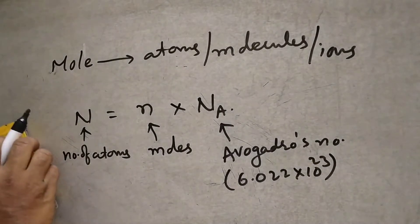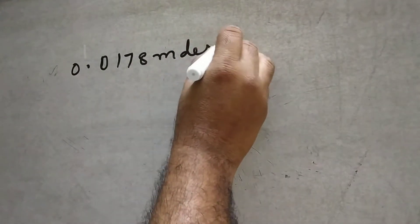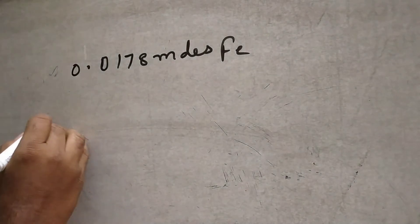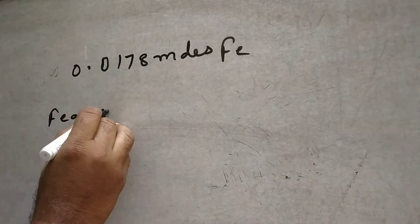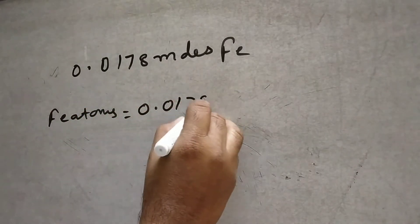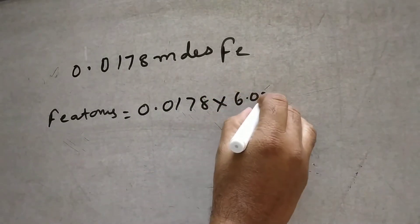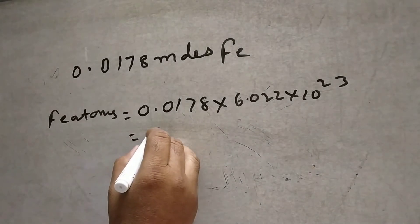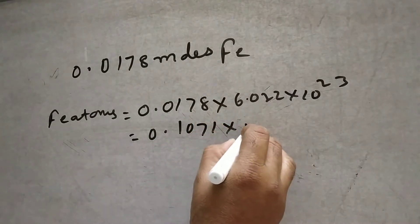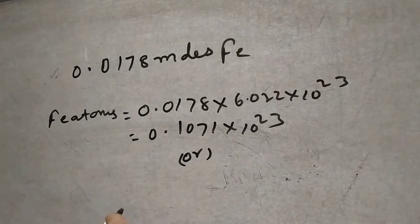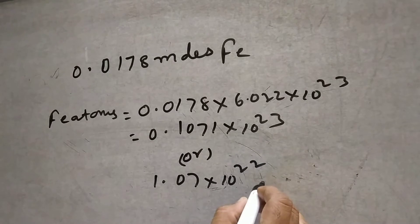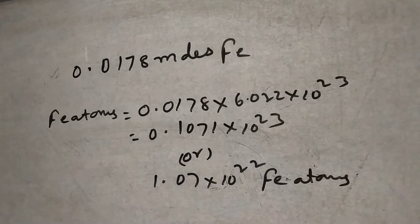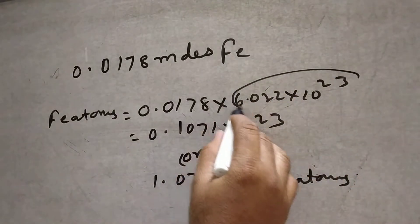For example, 0.00178 moles of Fe — how many Fe atoms are present? That is 0.00178 into 6.022 into 10 to the power of 23, which gives 0.1071 into 10 to the power of 23, or 1.07 into 10 to the power of 22 Fe atoms. Here you multiplied by Avogadro's number.